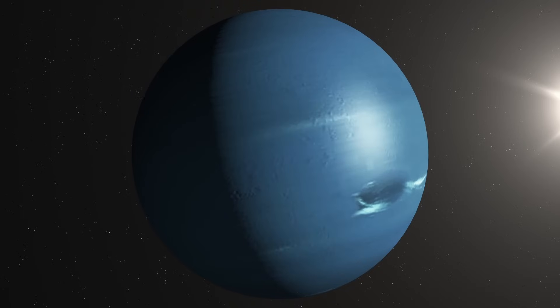When the Voyager 2 spacecraft flew by in 1989, it witnessed an Earth-sized, anti-cyclonic storm raging in the southern hemisphere, the Great Dark Spot.